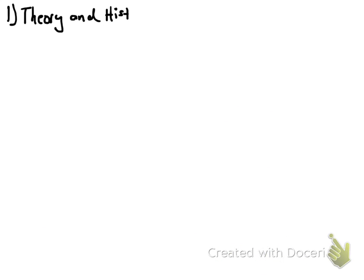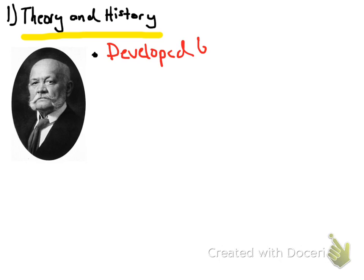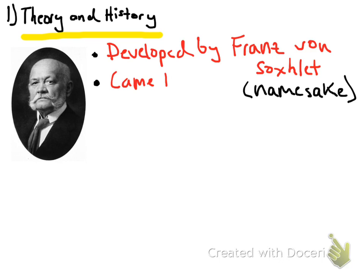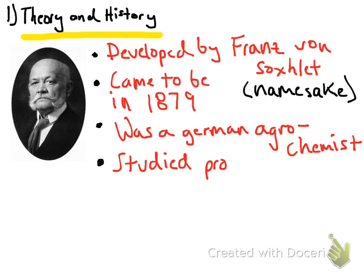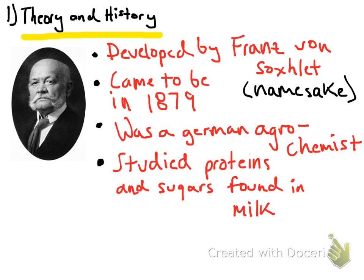Overall, the history of the Soxhlet is pretty simple. It was developed by its namesake, Franz von Soxhlet, a German chemist, and he developed it in 1879. He was an agrochemist, and his focus was primarily on proteins and sugars in milk, so he developed this Soxhlet as a way to study the fats in milk, similarly to Pasteur.